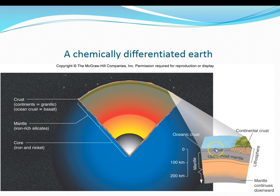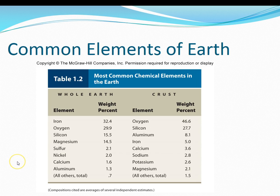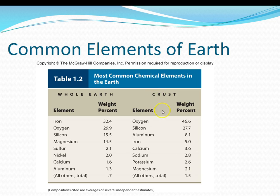I'm going to finish up Chapter 1, Video 1 with Table 1.2, which shows the whole Earth's composition according to element. If you look at the whole Earth, iron is the most abundant element by weight, followed by oxygen. However, if you look at just the crust, the most abundant element is oxygen, followed by silicon. This is expressed as a weight percent.